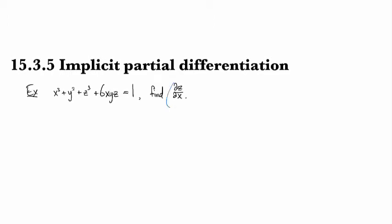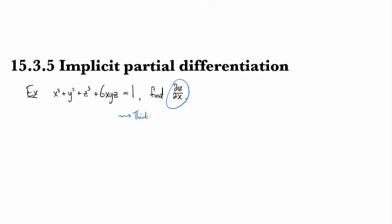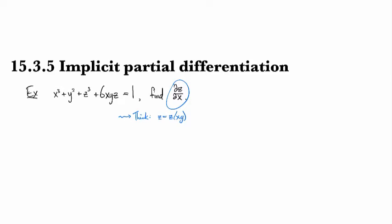So now just based on the fact that we're looking at dz/dx here, this means that we can make the interpretation that we are thinking of z as being a function of x and y, where x and y are independent.